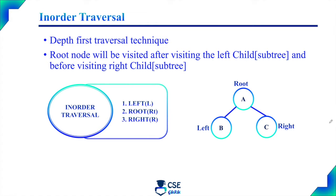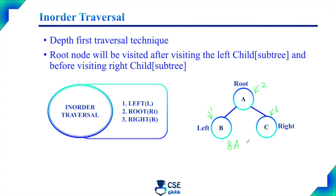For example, if you are considering a tree with three nodes — root node, left child, and right child — the left child will be visited first, then second the root node will be visited, then third the right child will be visited. So the inorder traversal for this tree is: left child B will be visited first, then root node A will be visited, and then right child C will be visited.